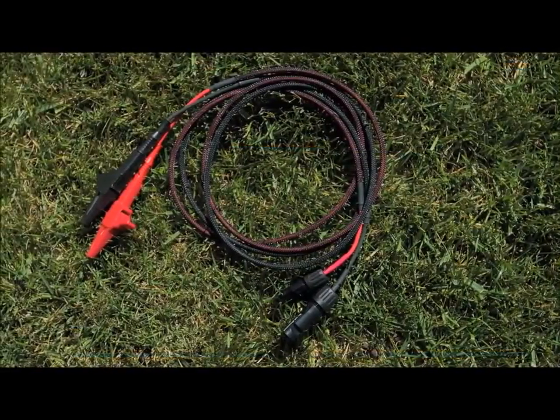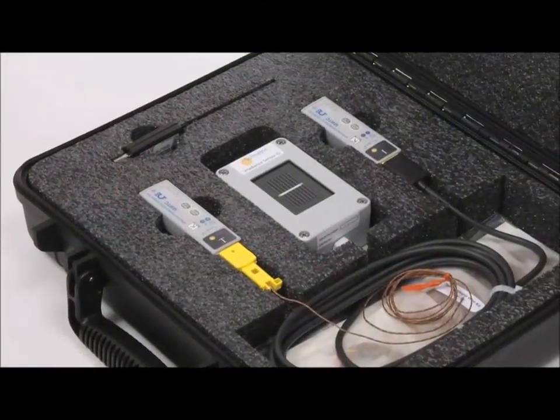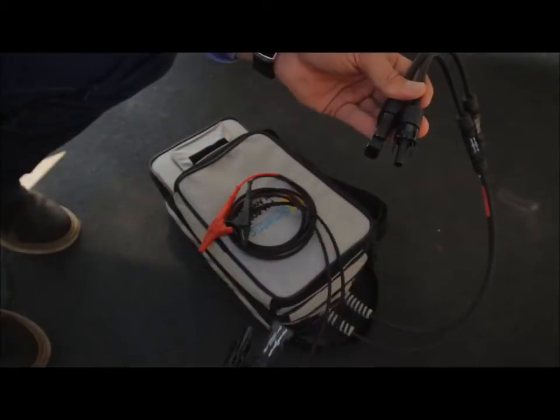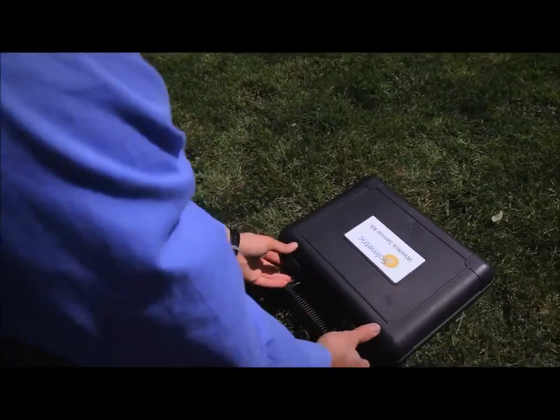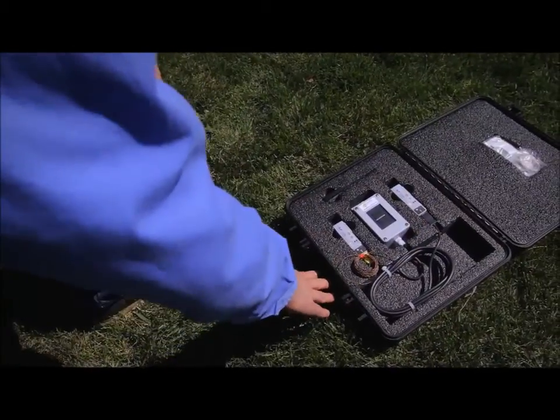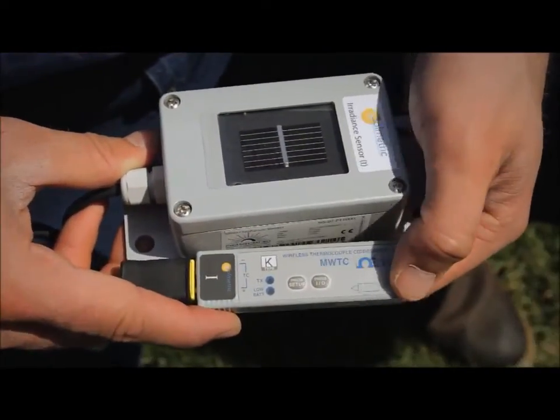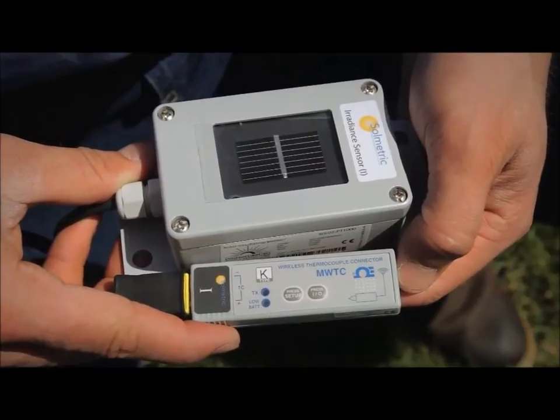Other optional accessories include PVA test leads and the wireless PVA sensor kit. The PVA test leads are 5 feet long and terminate in high current alligator clips. Irradiance and temperature are normally measured to ensure accurate model calculations. These values are constantly changing and irradiance in particular can change very rapidly.